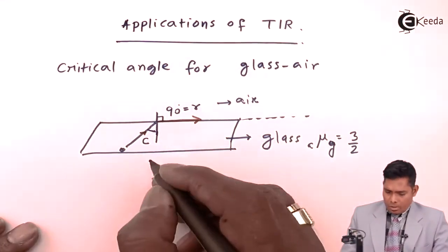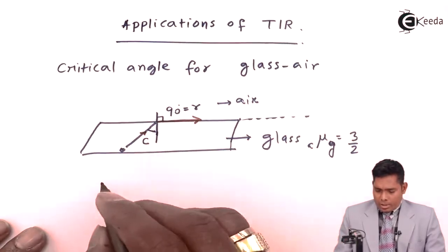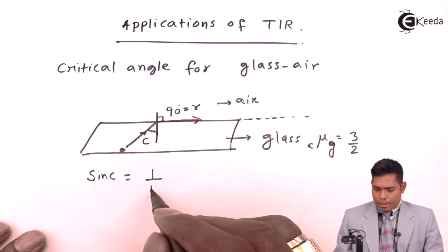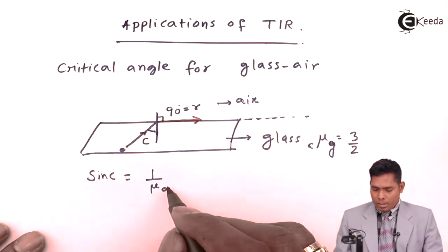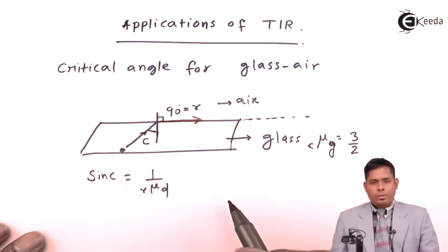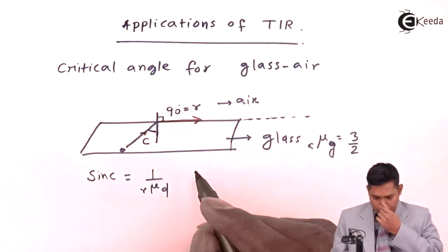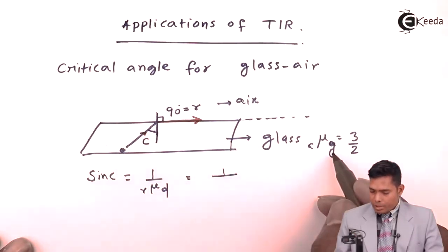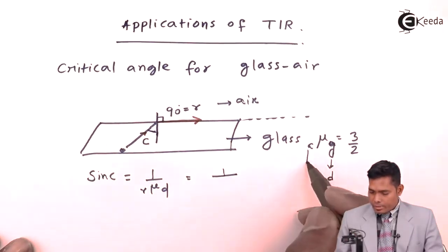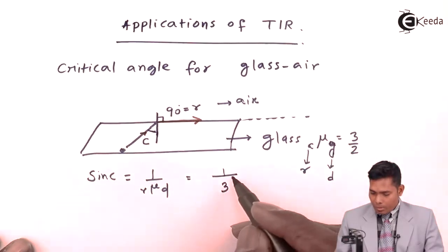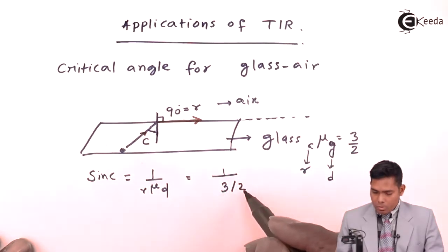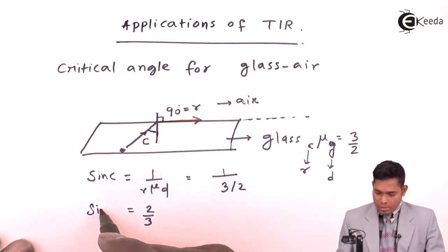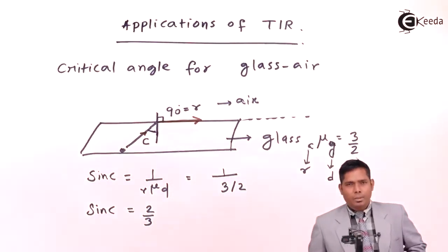The critical angle C satisfies: sine C = 1/μ, where μ is the refractive index of the denser medium with respect to the rarer medium. So sine C = 1/(3/2) = 2/3. This is correct because sine C cannot be greater than 1 in any case.